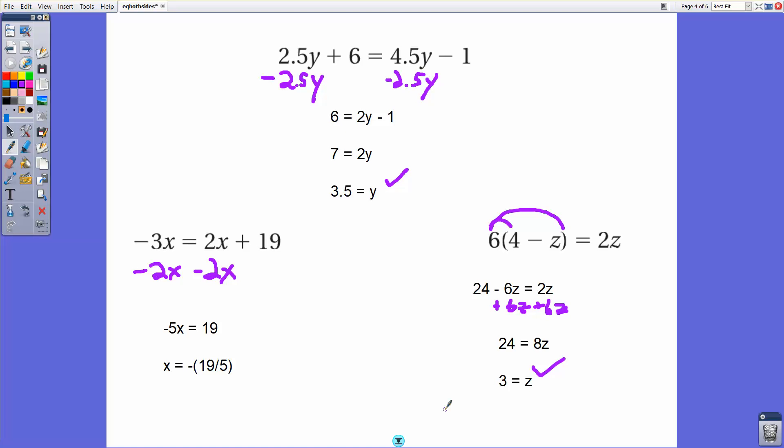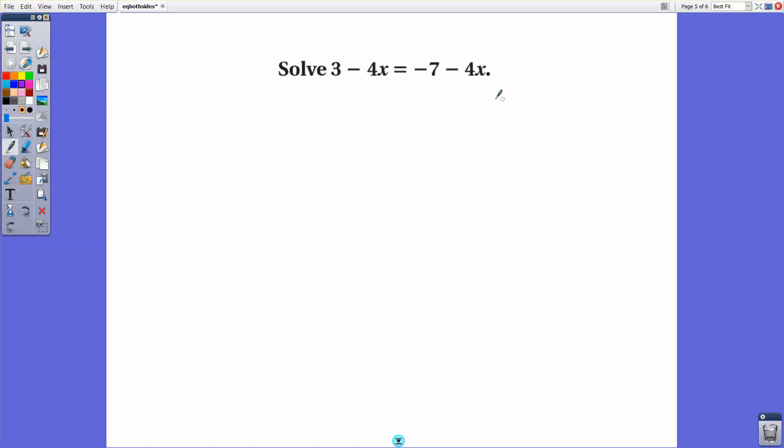So that takes care of those equations. Now, let's see a couple more examples. Here we have an equation where we have 3 minus 4x equals negative 7 minus 4x. Well, in this case, you'll notice that the coefficients are exactly the same, negative 4 and negative 4.